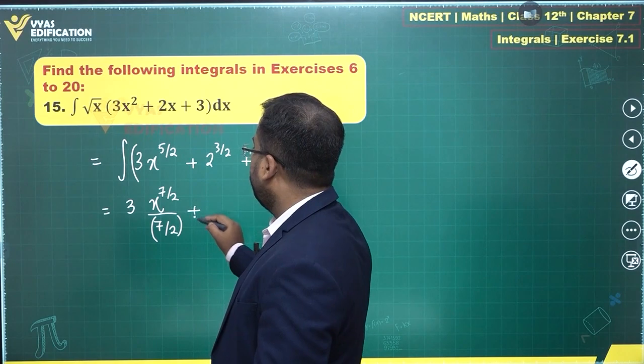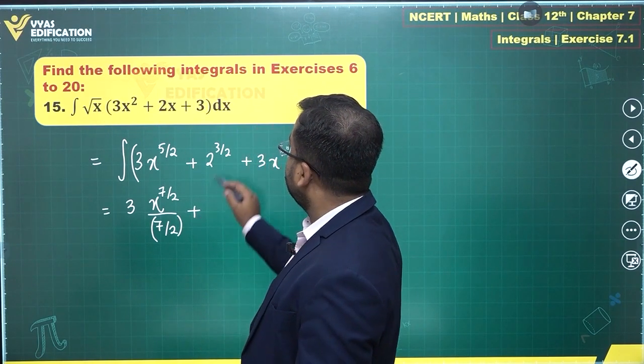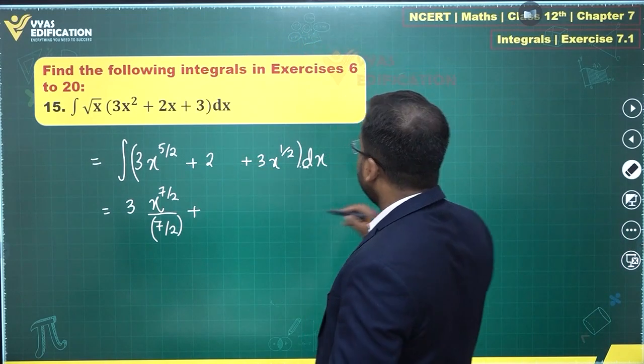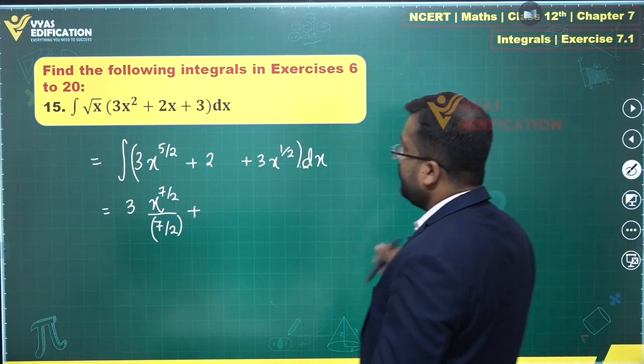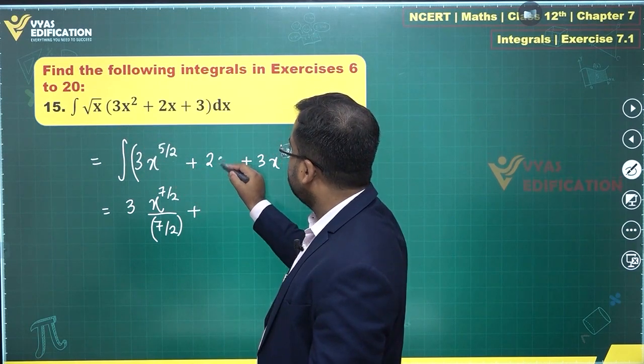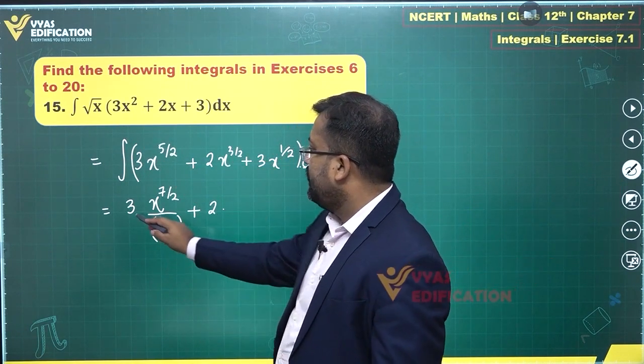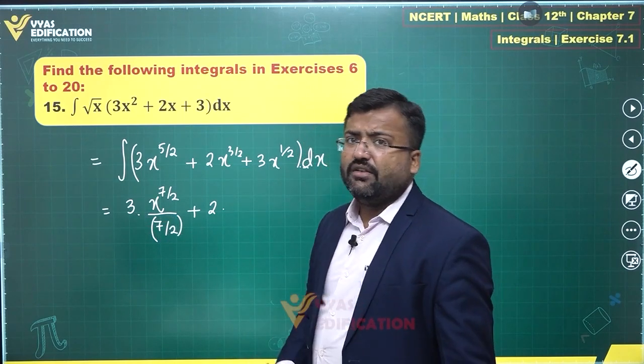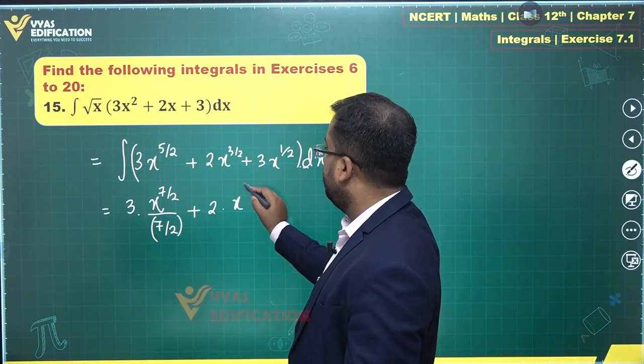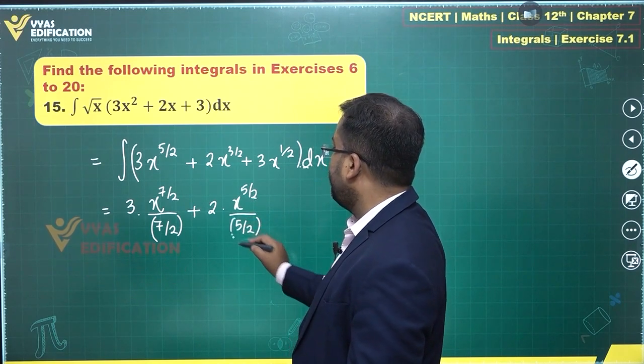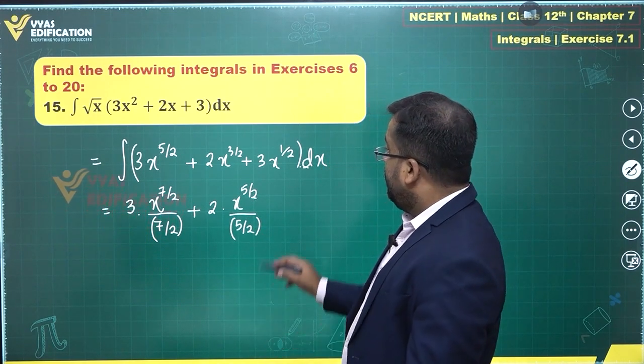Plus, this is 2 times x power 3/2. This is not 2 power 3/2, this converts to 2 times x power 3/2. X power 1, x power 1/2, x power 3/2. And this will further convert to 2 times x power 3/2. The integral will be x power 3/2 plus 1, which is x power 5/2.